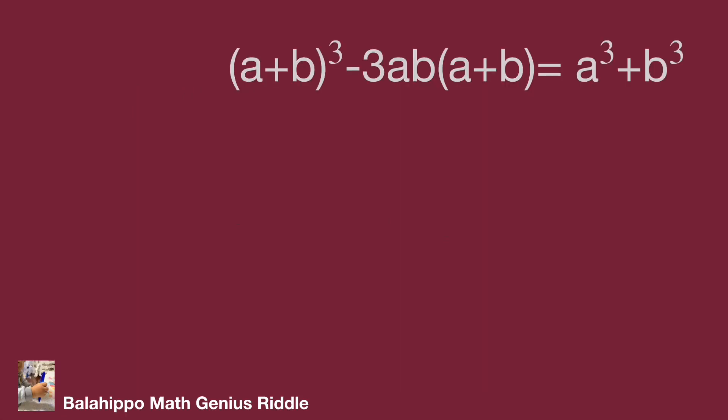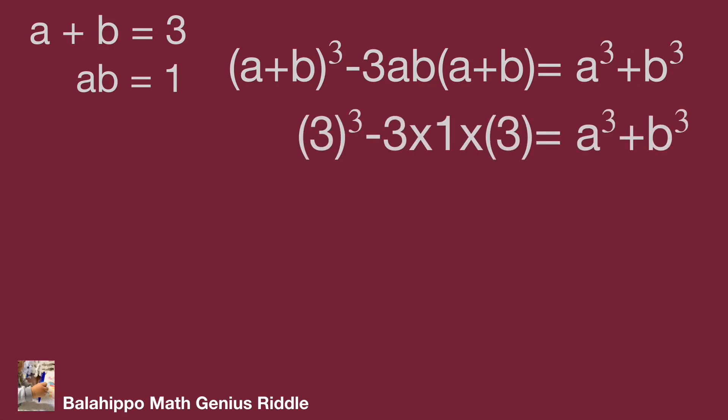The given equation a plus b equal to 3 and ab equal to 1. Substitute a plus b by 3 and a times b by 1 into the equation. Simplify it, then get 27 minus 9 equal to a cubed plus b cubed, so 18 equal to a cubed plus b cubed.